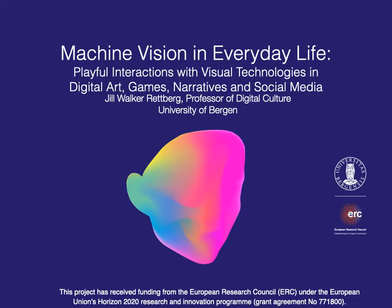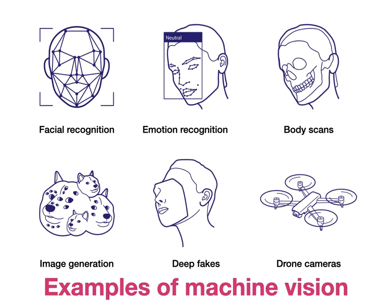Here's the project's full title, and these are some of the kinds of machine vision we're looking at. Facial recognition, for instance. Emotion recognition — so this is how computers are designed to either recognize a person's face and identify them, like 'this is Jill Walker-Rettberg's face,' or to recognize our emotions. Is someone smiling? Does that mean they're happy? Also body scans, medical scans, image generation, and deep fakes. Cameras that are in other places or self-automated.